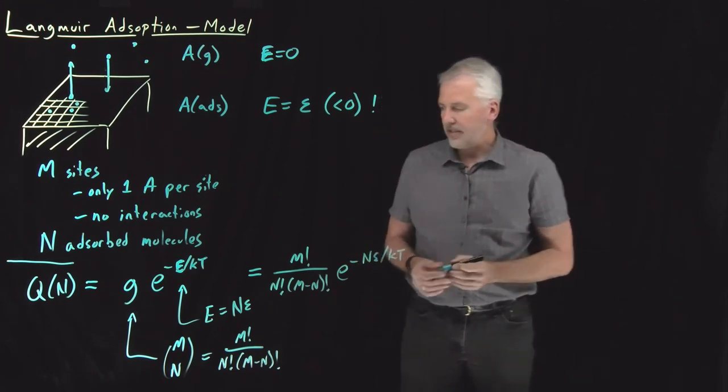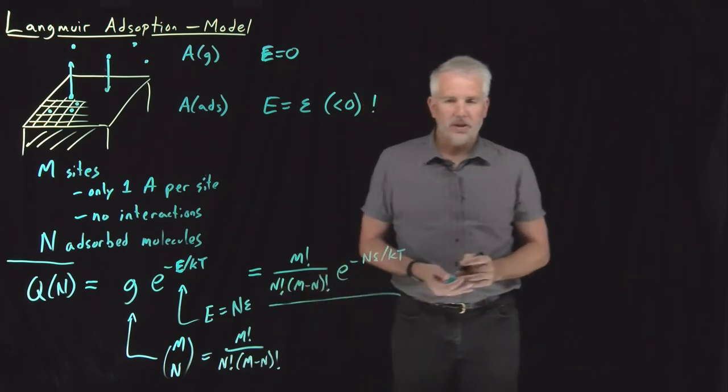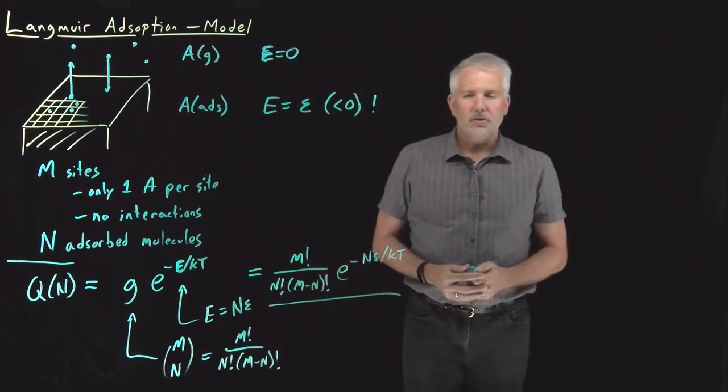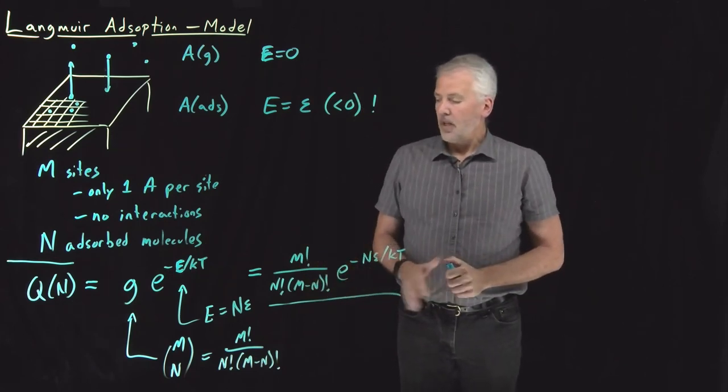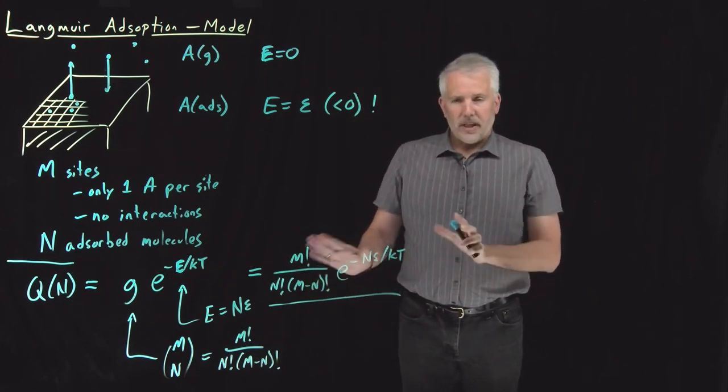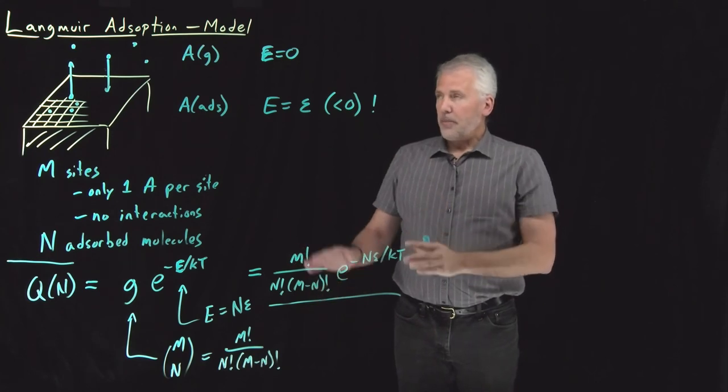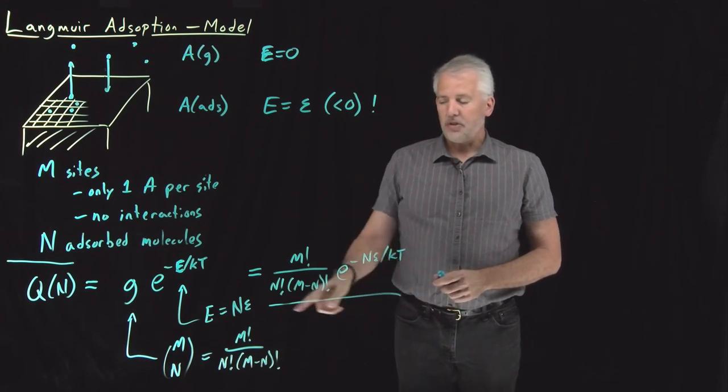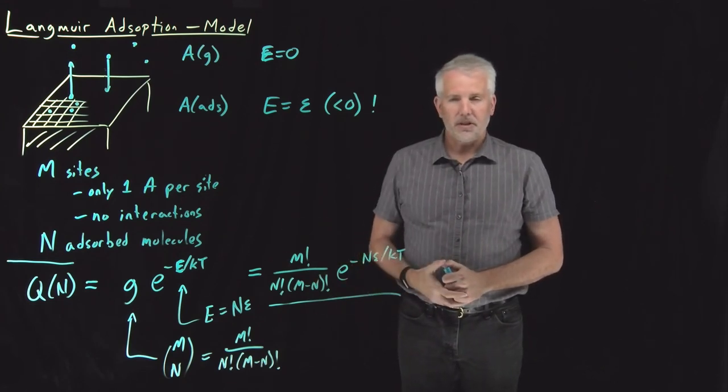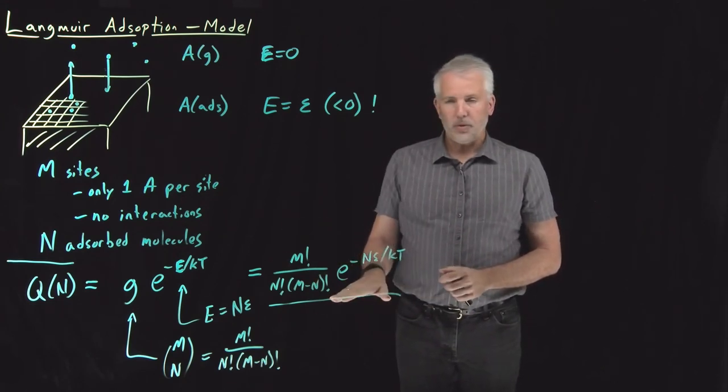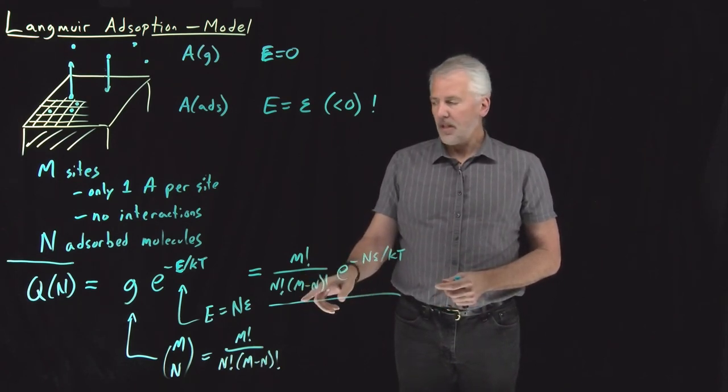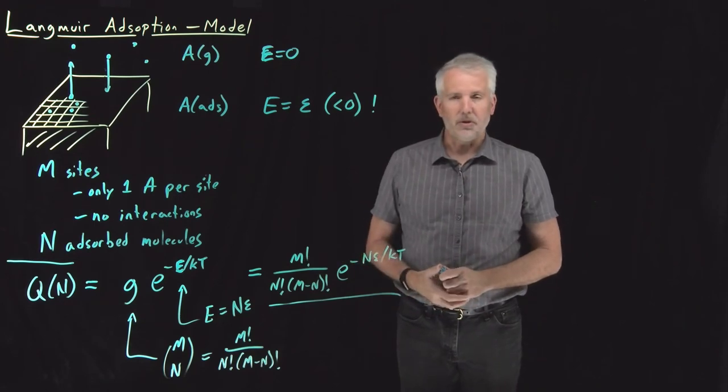All right, so that's an expression for the partition function of the system. If I have capital N molecules adsorbed onto the surface, that's a good starting point. That's essentially, we'll stop there, because now we've defined the model, we know what the partition function is for this model. The next step will be to take a closer look at that partition function, and do what we often do with partition functions, which is to try to understand the thermodynamics of the system via that partition function, do a little bit of statistical mechanics. So that's what's coming up next.